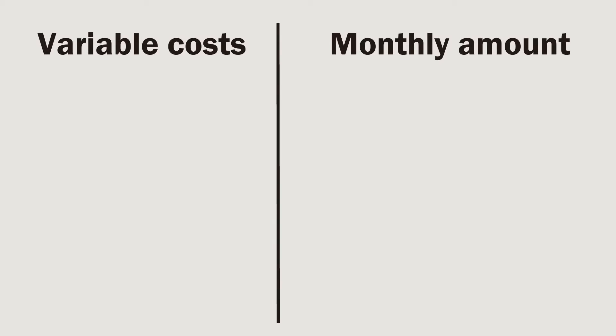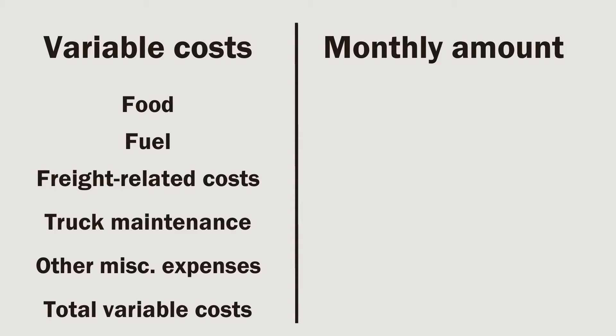The next step is to determine what your variable costs were from the last month. Variable costs are expenses that change month over month based on how much you work, how much you drive, and how many loads you haul. When filling out your variable costs column, consider costs such as your food, fuel consumption, any freight-related costs such as freight brokers, dispatching services, load board fees, all truck maintenance from the last month, and any miscellaneous expenses.